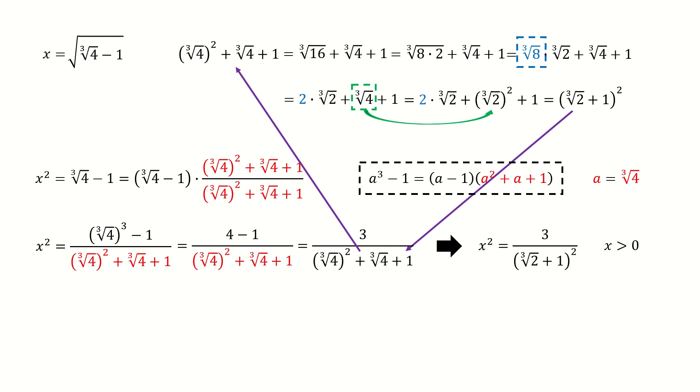Now we plug in to replace the denominator. Then we take a square root on both sides. But we are not done yet, because we need to rationalize the denominator.